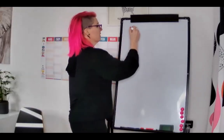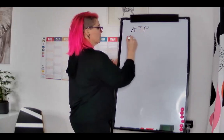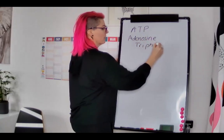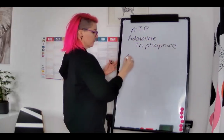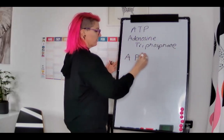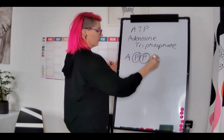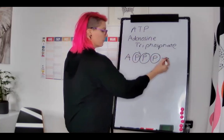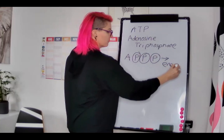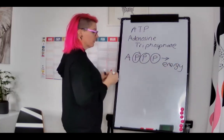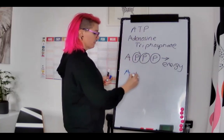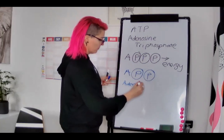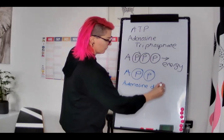So we have ATP — written out in full: adenosine triphosphate. Tri, as we know, means three. So it's adenosine with three phosphate molecules — one, two, three phosphates. When we release energy, one of these phosphates breaks off, which gives us energy. We're then left with adenosine diphosphate — adenosine and two phosphates.